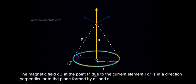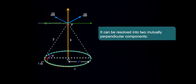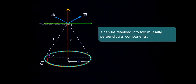The magnetic field dB-bar at the point P due to the current element i dl-bar is in a direction perpendicular to the plane formed by dl-bar and r-bar. It can be resolved into two mutually perpendicular components: